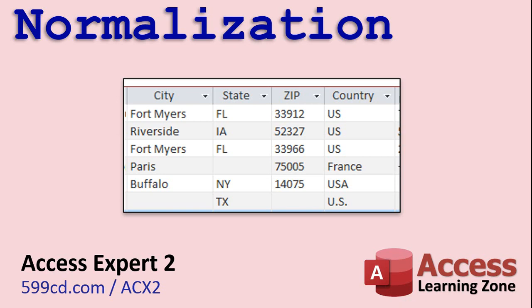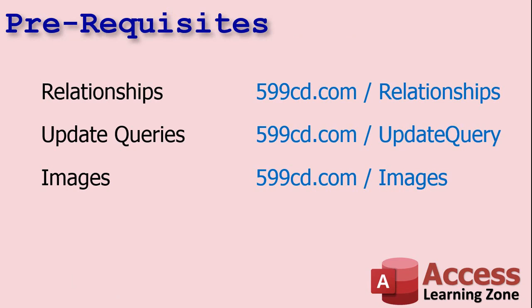Remember, you've got to learn how to walk before you can learn how to fly. Now, before we continue, three prerequisites: relationships — go watch my relationship video if you don't know how to relate two tables. Update queries — I have an earlier update query video showing how to update values inside one table. And if you want to follow along with the bonus material where I show you how to put a world flag in, go watch my images video first. I'll put links down below.